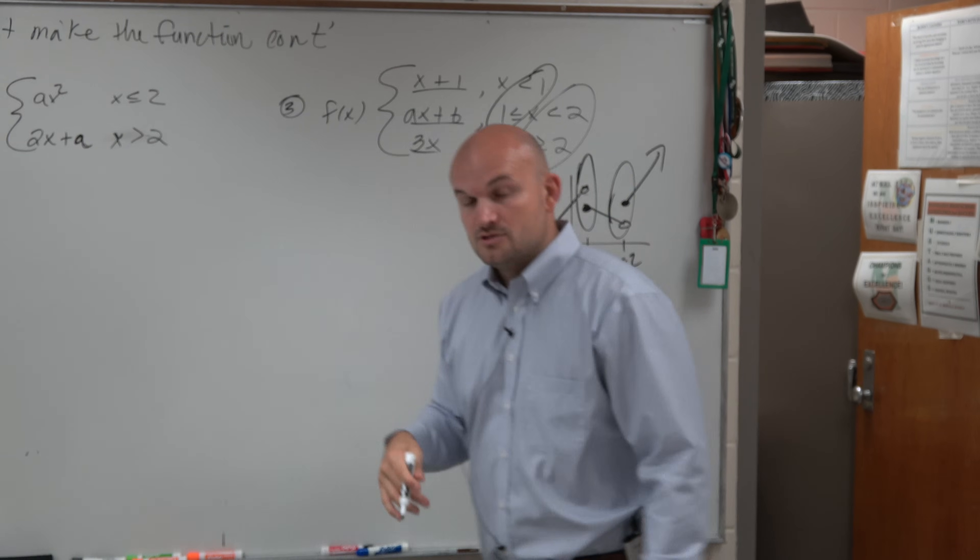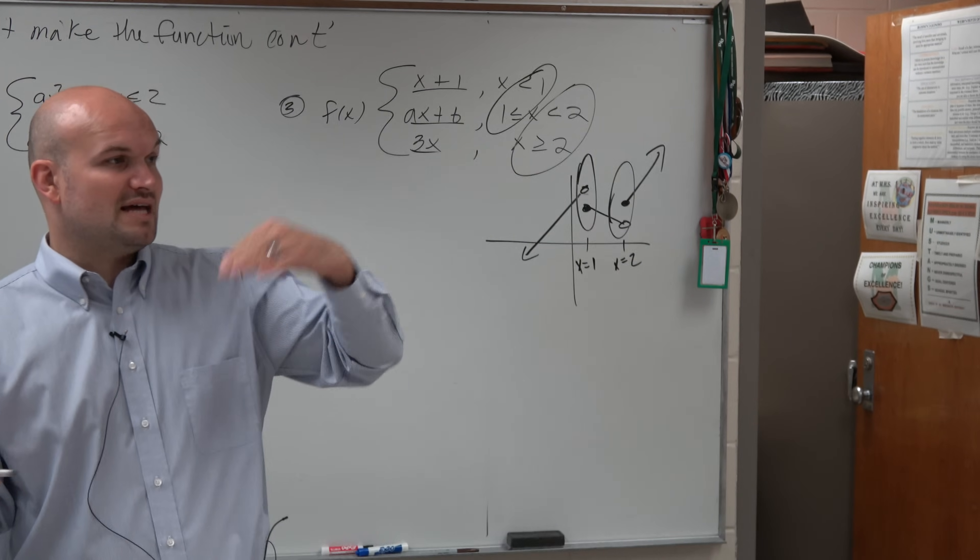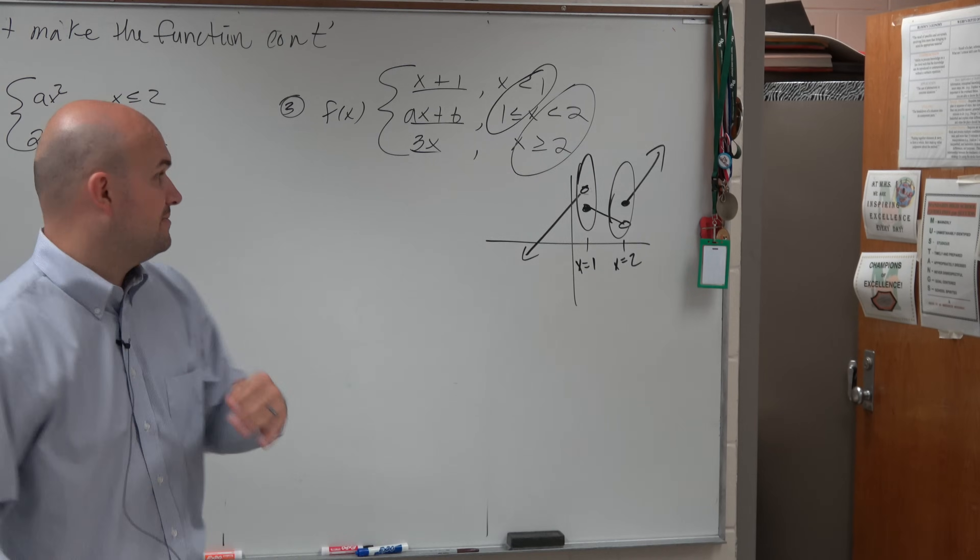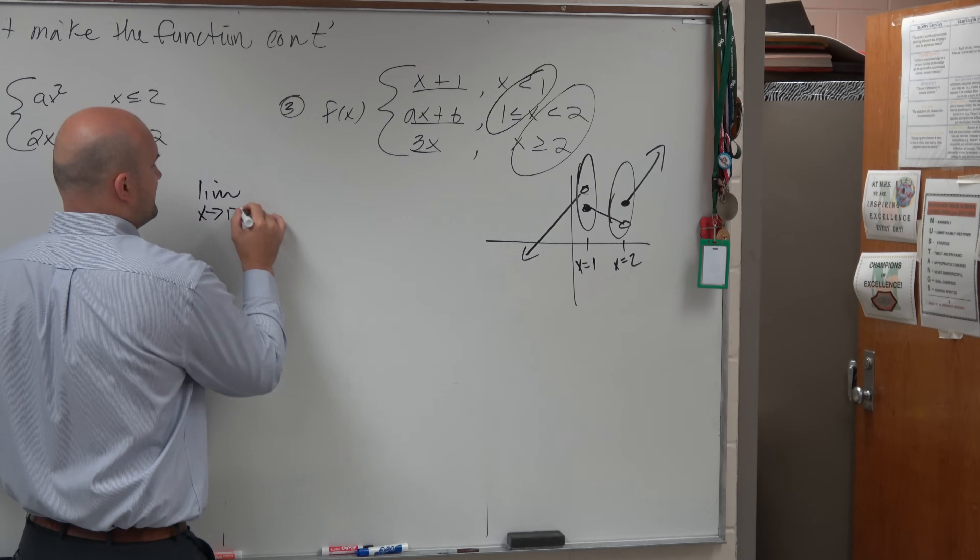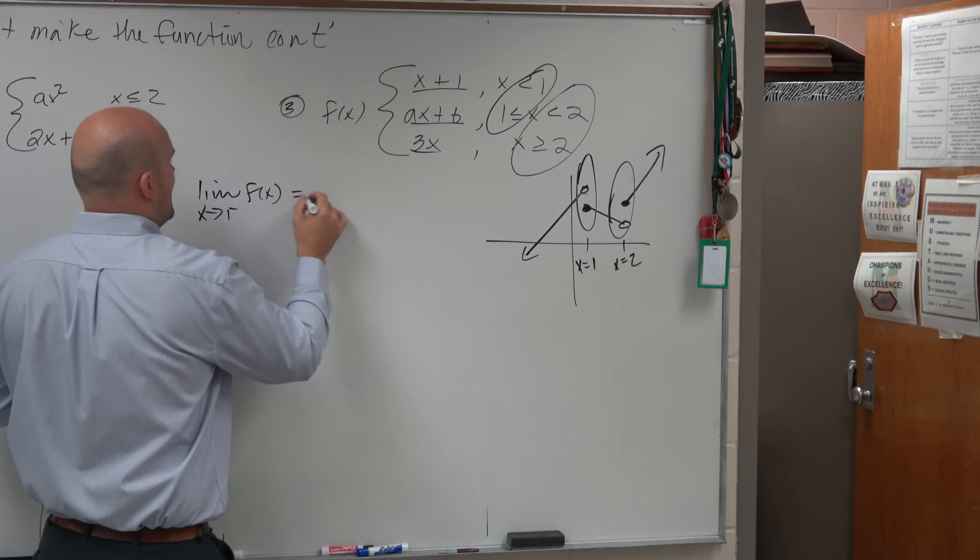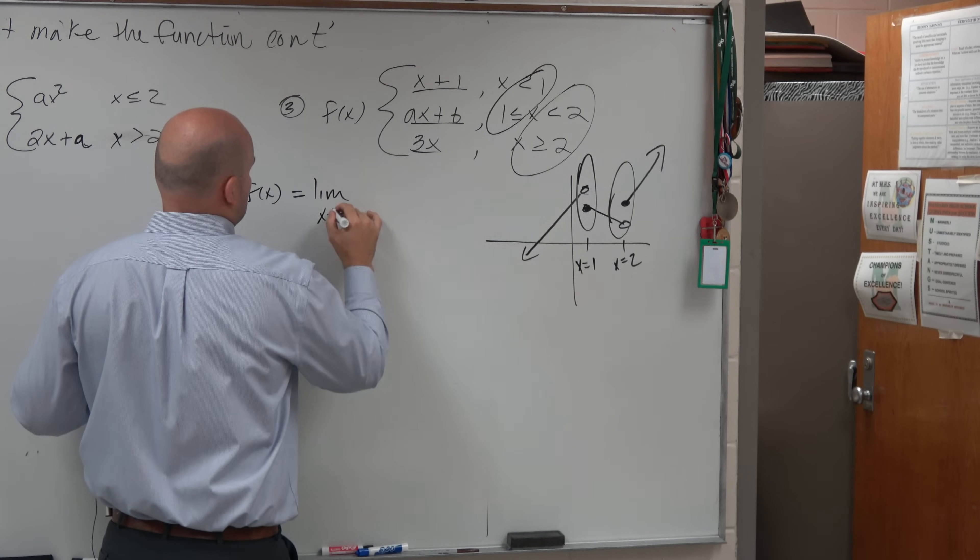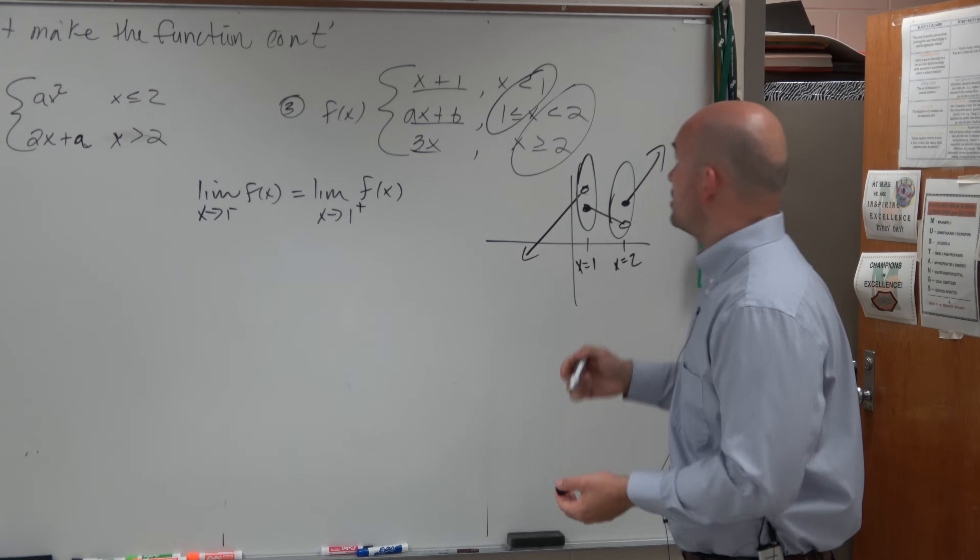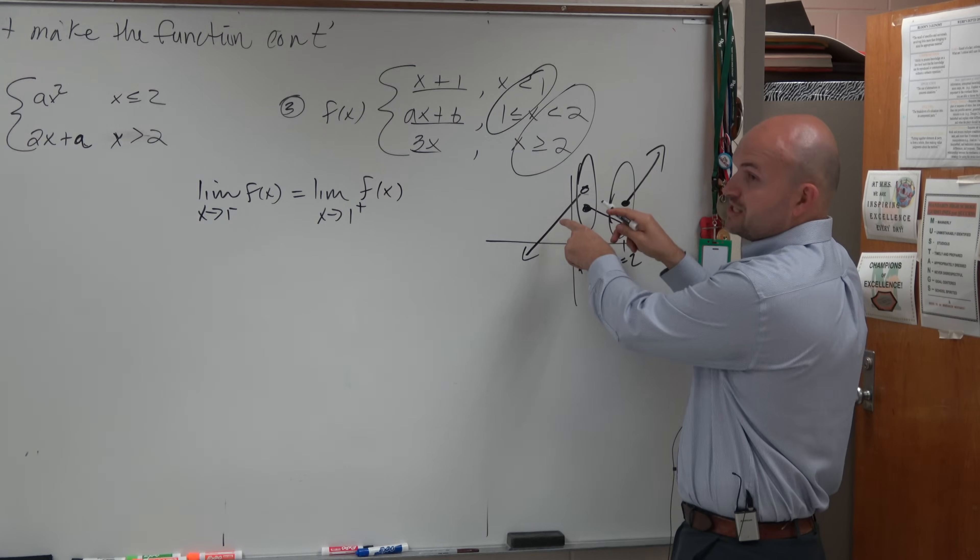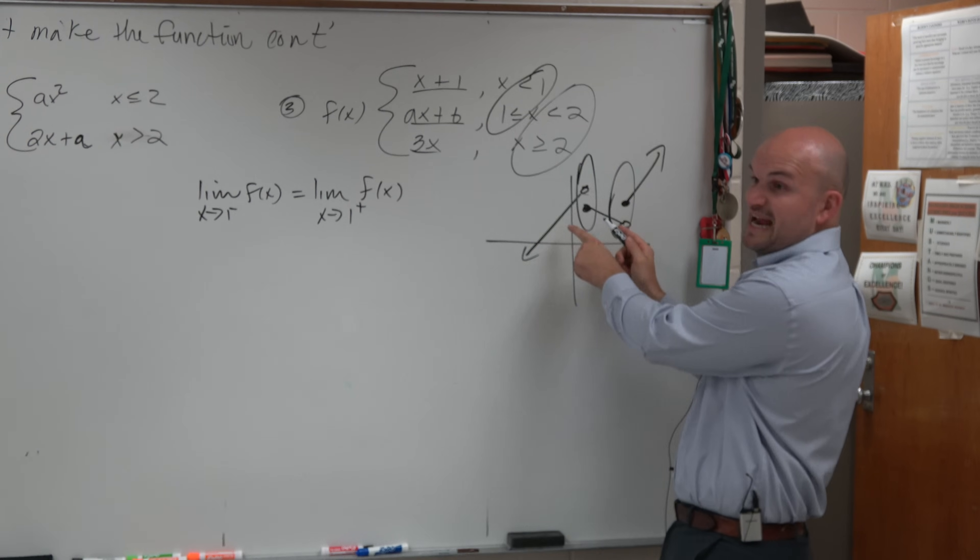You guys see that? So for them to be connected, we know that the left and the right-hand limits need to be the same. So we'd say that the limit as x approaches 1 from the left of f of x has to equal the limit as x approaches 1 from the right of f of x. So we basically want to make sure these are the same from the left and right-hand because right now they're not the same.